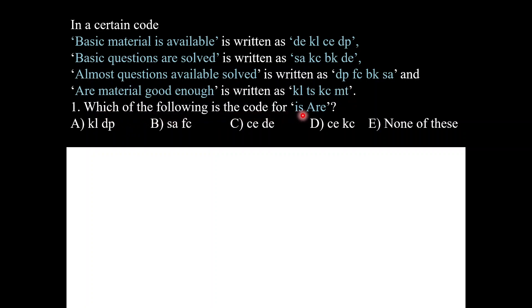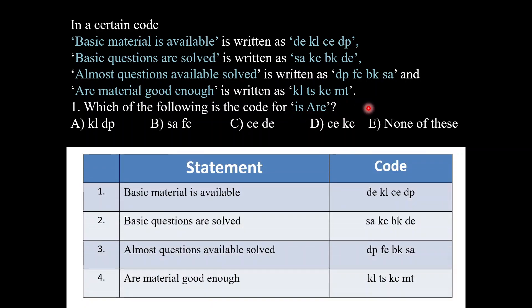The question is: which of the following is the code for 'is R'? We have to find the codes. First, drawing the table — the word 'is' is present only in statement number 1, so its code will be present only in statement 1. Code D E is also present in statement 2; K L is in statement 4. The code C E is only in statement 1, so the code for 'is' is C E.